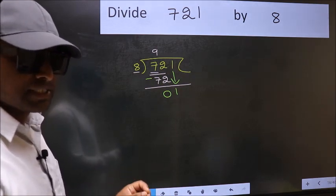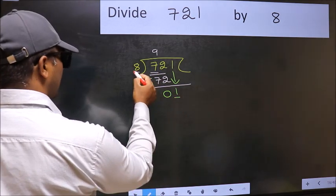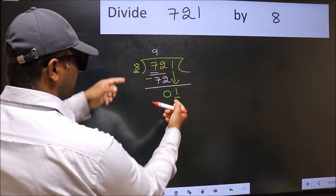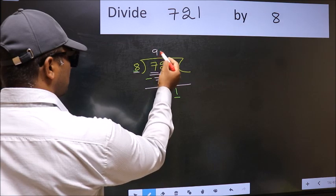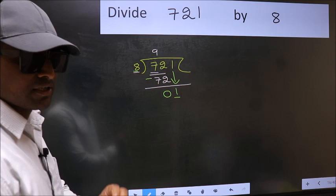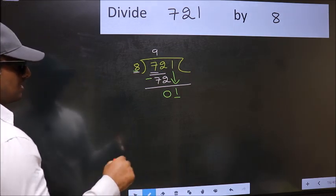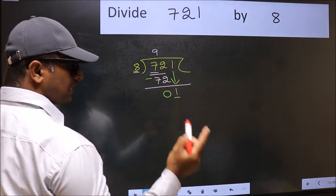And the mistake is this. Here we have 1 and here 8. 1 is smaller than 8. So what many do is they directly put dot and take 0, which is wrong. Why is it wrong? Because just now you brought this number down.